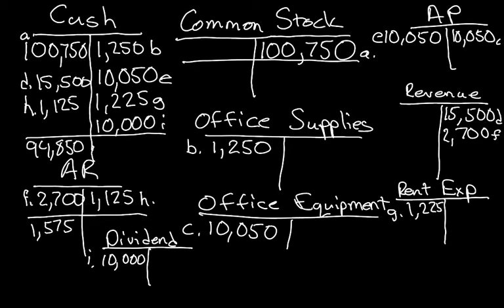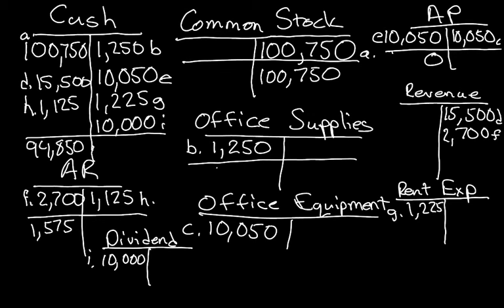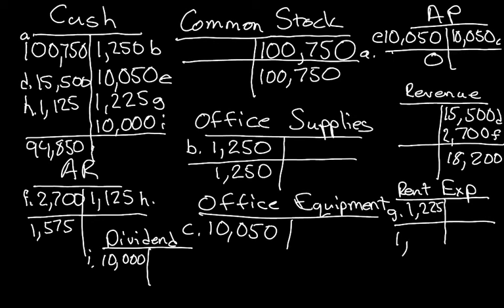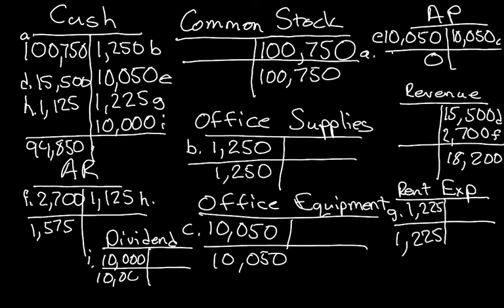Common stock has only one transaction, so it carries a credit of $100,750. Accounts payable — since debits and credits are equal — has a zero balance. Office supplies has a debit balance of $1,250. Revenue has a credit balance of $18,200. Rent expense has a debit of $1,225. Office equipment has a debit of $10,050. And finally, dividends has a debit of $10,000.